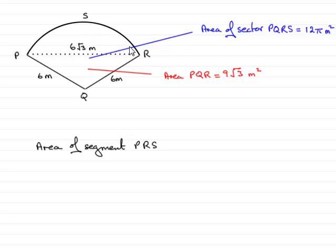Very easy because we've already found out the area of the sector PQRS in an earlier part was 12π square meters, and we also found the area of the triangle PQR, and that we found out to be 9√3 square meters. So all we need to do is take the area of the triangle away from the area of the sector.